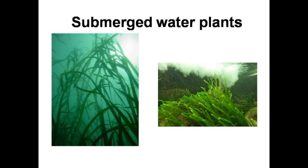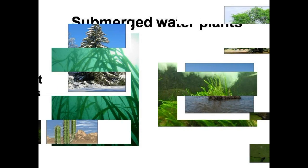Some plants grow completely underwater. These plants are called submerged plants. Their leaves are narrow and flexible, and they give out oxygen in the water, which is used by fish.